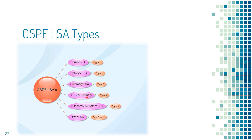AS External LSAs are generated by the ASBR to advertise destination information of external networks. To view, use 'show ip ospf database external'. The RIB of OSPF will show routes marked with O E2 or O E1.